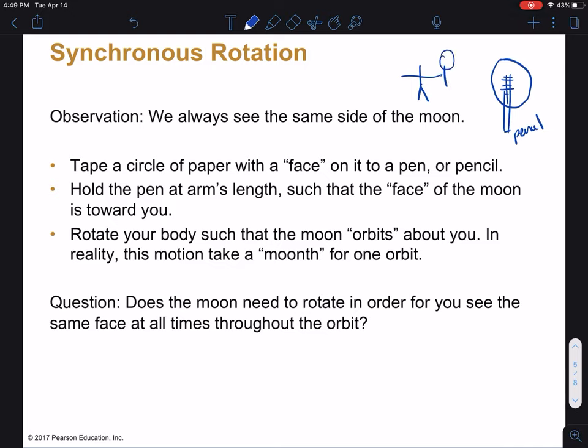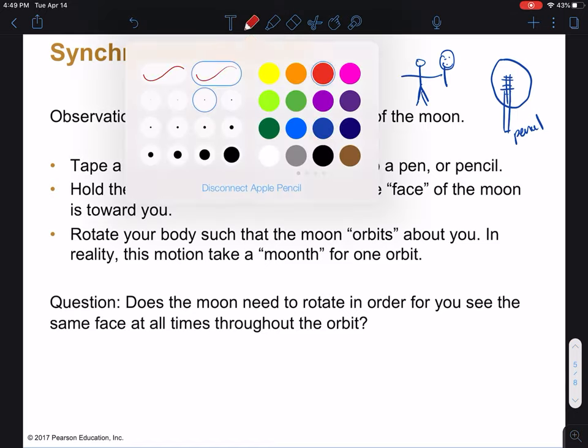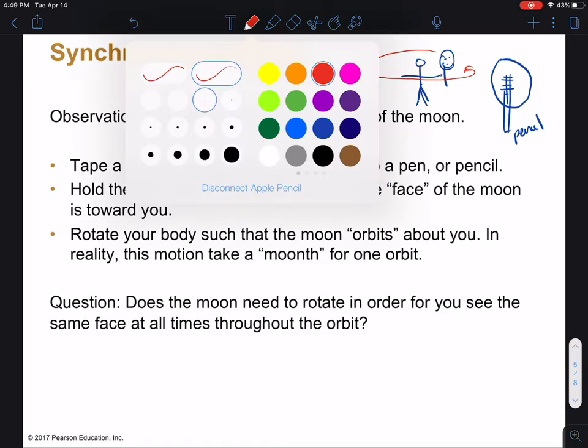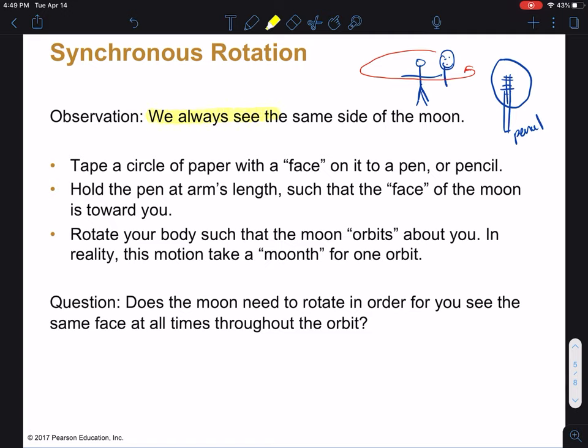Once you have all your materials gathered up, what I want you to do is to take your pen or your pencil and go ahead and tape your piece of paper right on there. And then what you're gonna do is hold that out at arm's length so you can see the face that you drew on there. And then you're gonna take that moon that's facing you and rotate your body and or your arm around in a circle so that the moon orbits your head. I want you to try this and see if you can answer the question: does the moon need to rotate in order for you to see the same face at all times throughout the orbit?